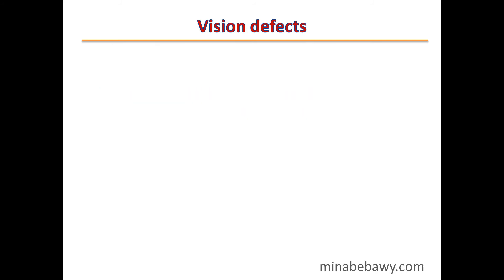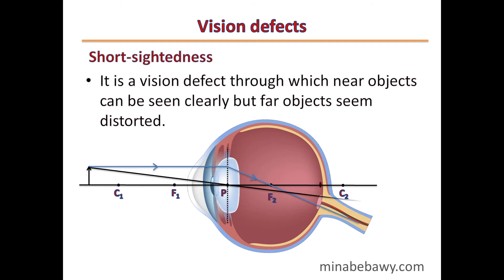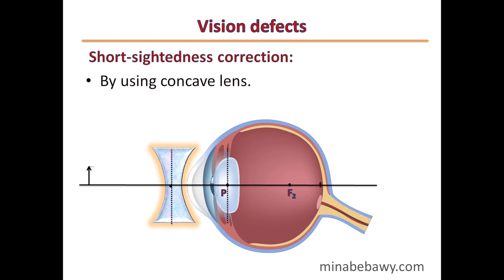Vision defects: Short-sightedness is a vision defect through which near objects can be seen clearly, but far objects appear distorted. The image forms in front of the retina, not on it. Short-sightedness is corrected by using a concave lens to diverge the light first, then the cornea collects it so the image is formed on the retina.